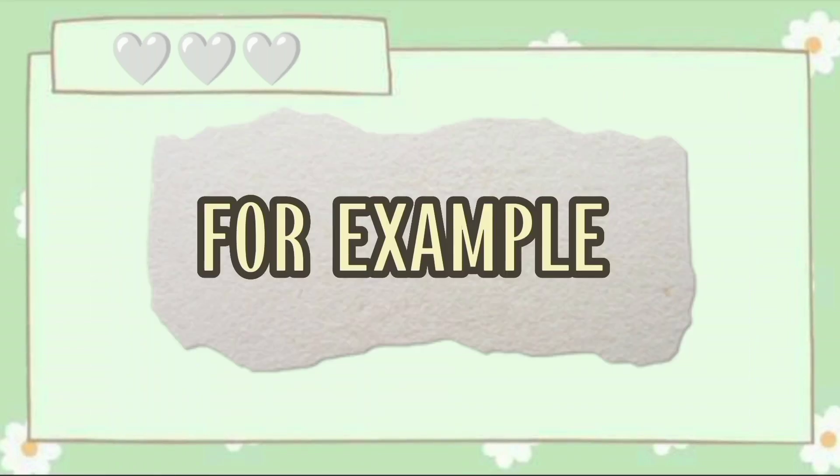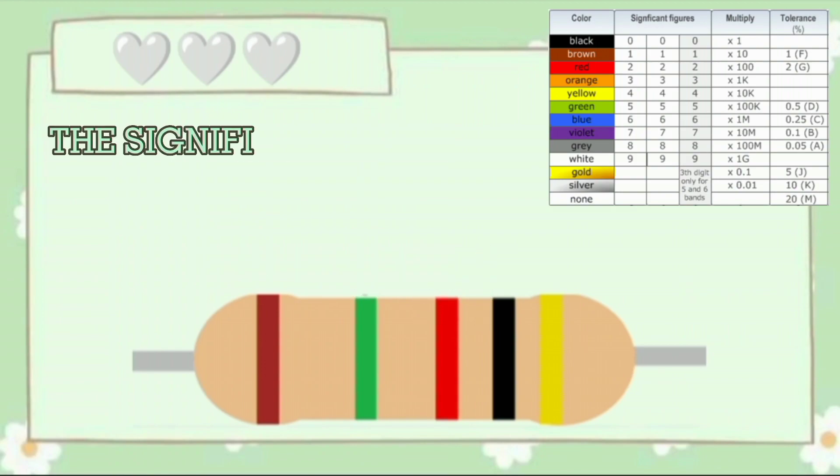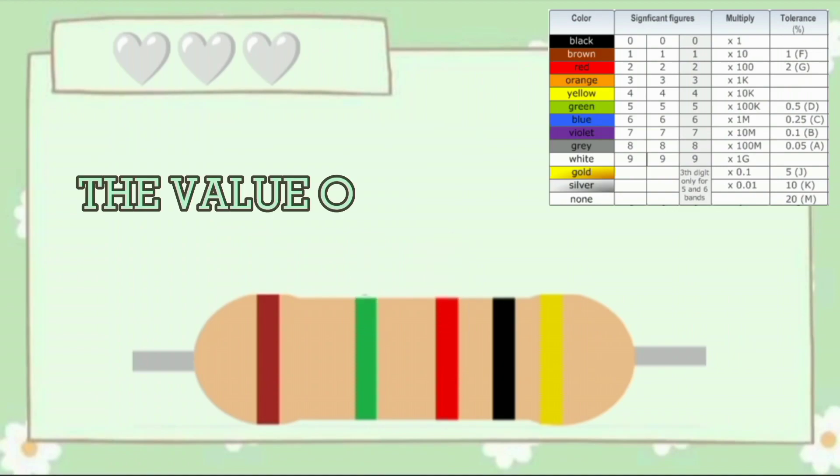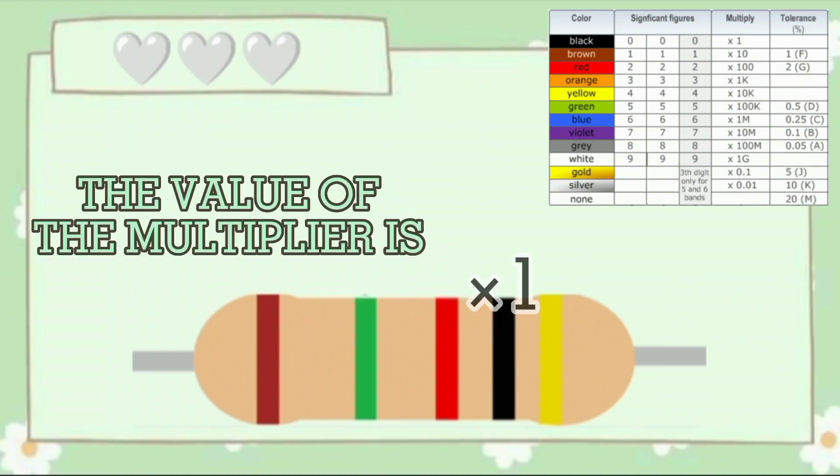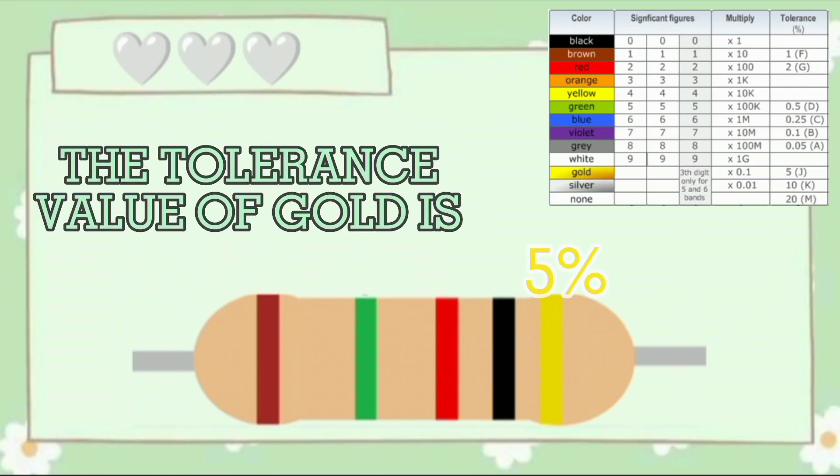For example, the first 3 bands are brown, green, red. The significant digits are 1, 5, 2. The multiplier value is times 1. The tolerance value of gold is 5%. Therefore, the resistance value is 152 ohms and the tolerance value is 5%.